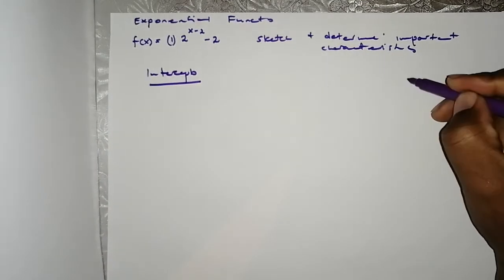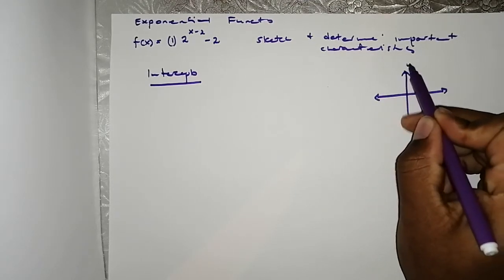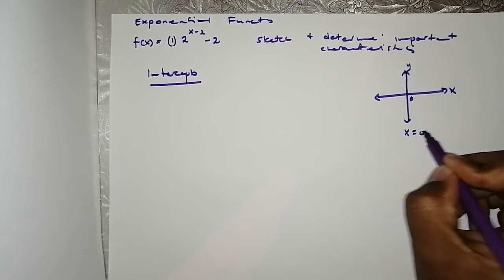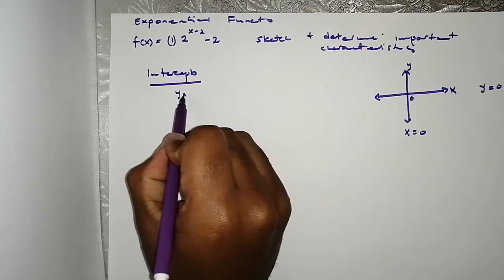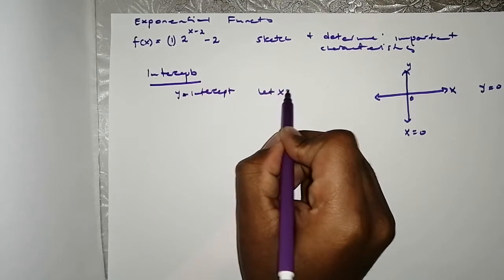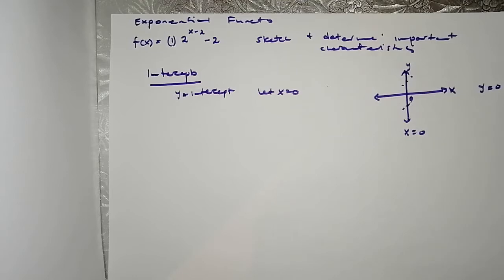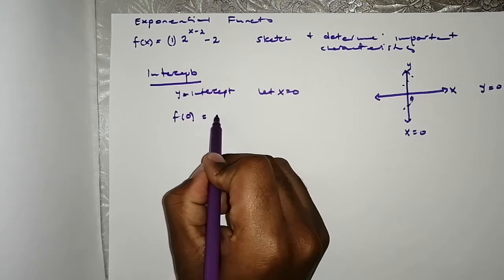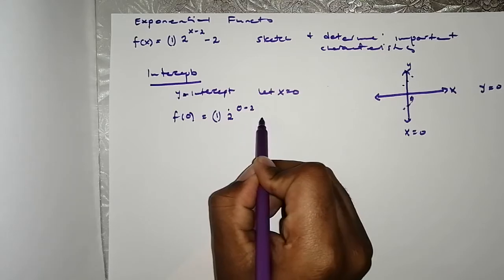The intercepts are where the function will cross or cut the axes. The y-axis has equation x = 0, and the x-axis has equation y = 0. For the y-intercept, we let x = 0 and find f(0). So this is 1 multiplied by 2 to the (0 minus 2), minus 2.